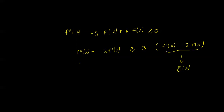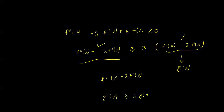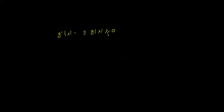Now we introduce the auxiliary function g(x) equals f'(x) minus 3 times f(x), which is greater than or equal to zero. This is a linear differential equation. The integrating factor has coefficient minus 3, so we multiply by e raised to the power minus 3x.